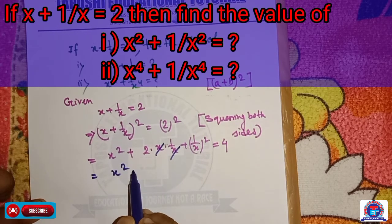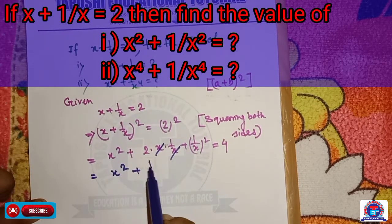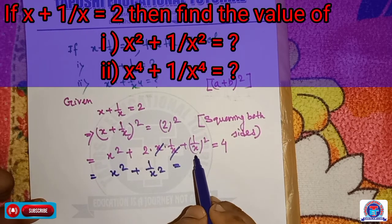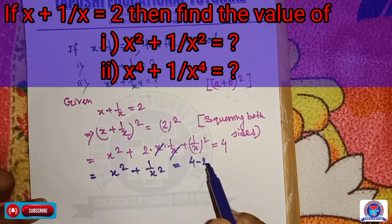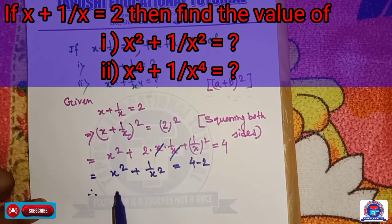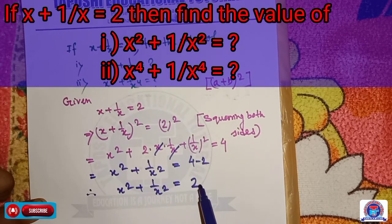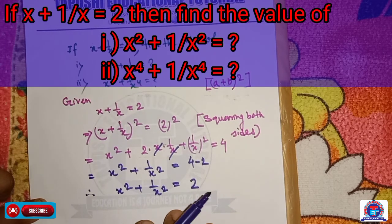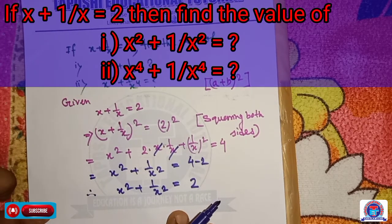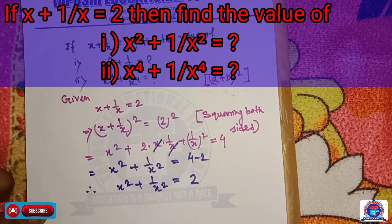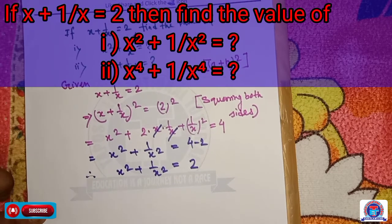The x cancels, so x square plus 1 by x square is equal to 4 minus 2. Therefore x square plus 1 by x square is equal to 2. That is the correct answer. I hope you understood this mathematical problem and its solution.